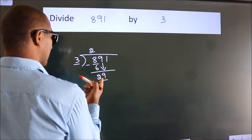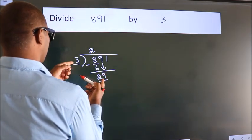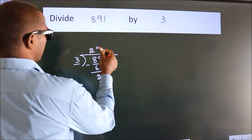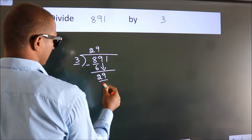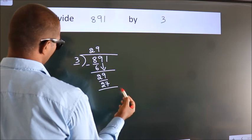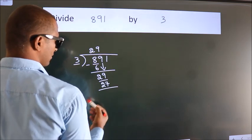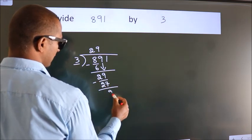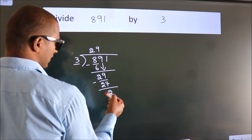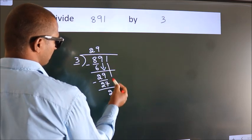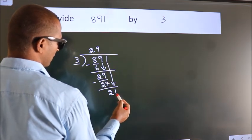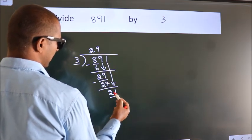A number close to 29 in the 3 times table is 3 9's = 27. Now we subtract and we get 2. After this, bring down the beside number — so, 1 down. So, 21.